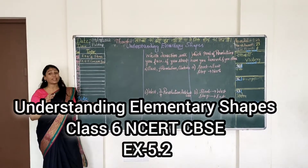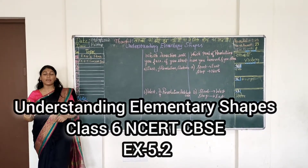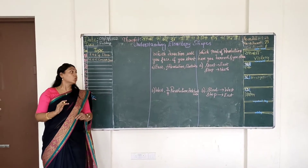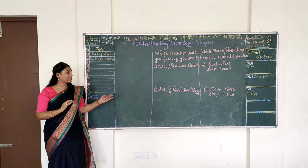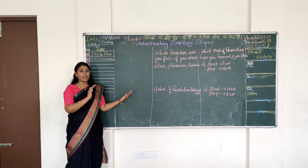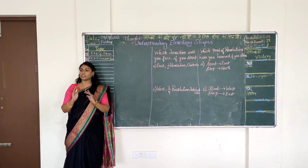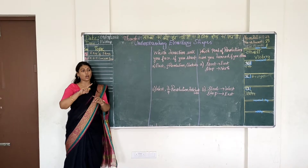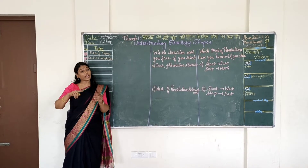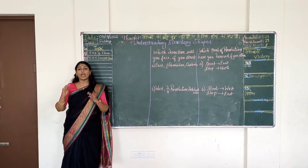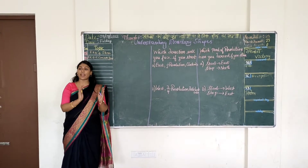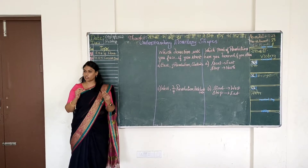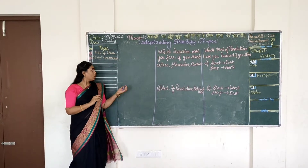Today we are going to see understanding elementary shapes, exercise 5.2. In that, we will look at directions and which matches which revolution — how many times we should turn and what fraction we should write.